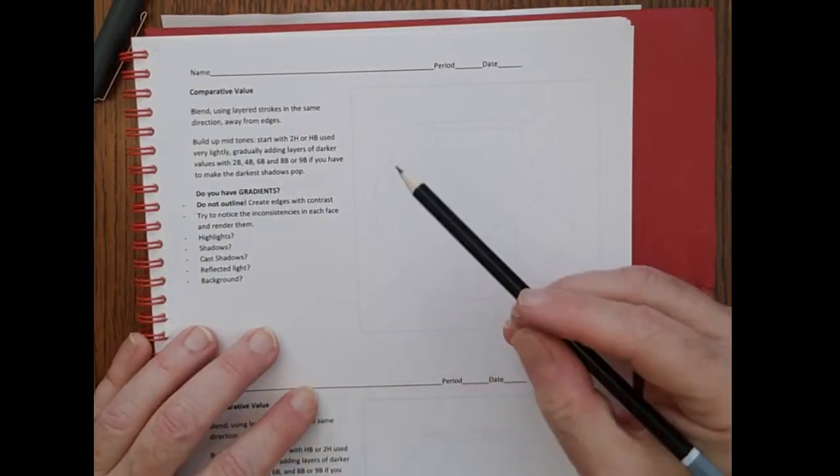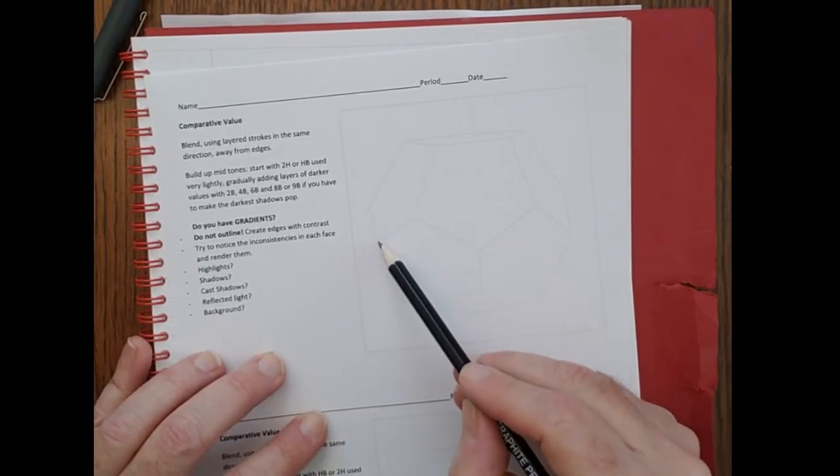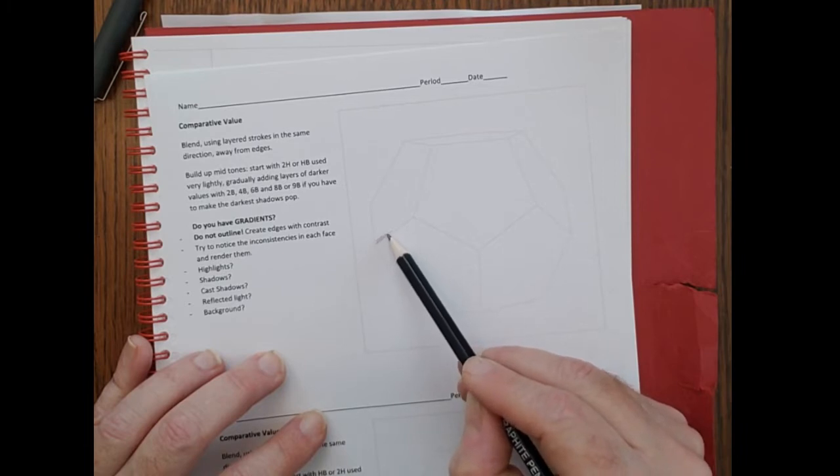And then you're just going to start shading, right? So again, I'm starting with the 2H here, and I'm just going to make really small, short lines to fill in this region with 2H.